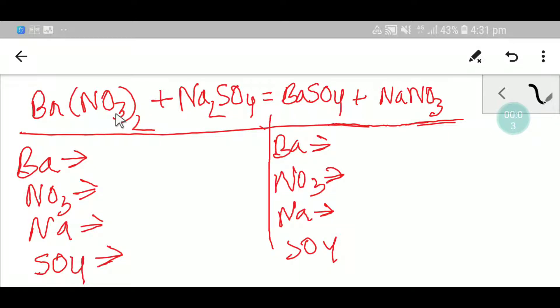Welcome to chemistry tutorial 360. Today we are going to balance this equation. This is barium nitrate, this is sodium sulfate, this is barium sulfate and this is sodium nitrate.